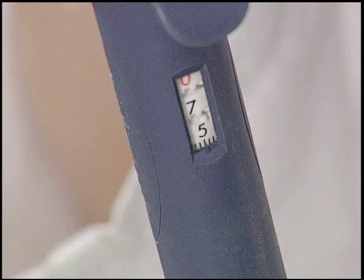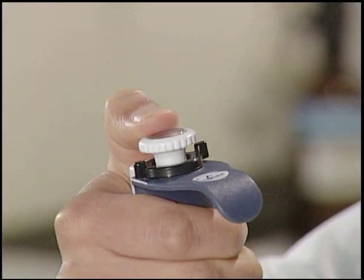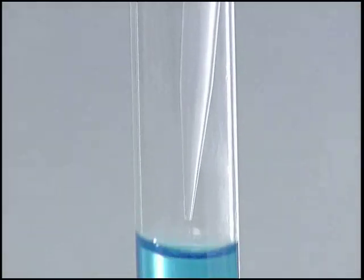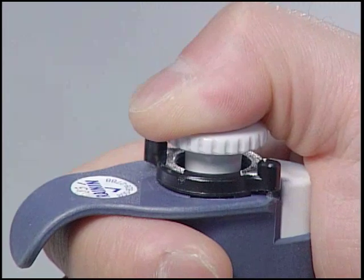Depress the plunger only to the first stop. Place the tip slowly into the solution at about a 2 to 3 millimeter depth. Now, with the tip in place, slowly release the piston. A slow release is crucial to prevent the solution from jumping up into the shaft.